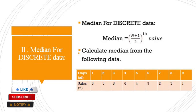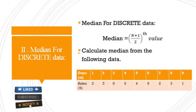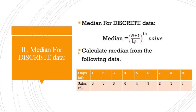Now we discuss median for discrete data. The formula used is: Median = ((N + 1) / 2)th value, where capital N is total frequency. Example: calculate median from the following data. Days: 1, 2, 3, 4, 5, 6, 7, 8, 9 and frequencies: 3, 5, 8, 6, 4, 9, 2, 3, 1. This is discrete data.